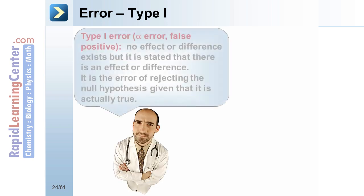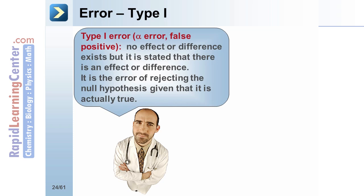When testing hypotheses, there are two types of error that may occur. Type 1 error, which is known as a false positive, occurs when no effect or difference exists but it is stated that there is an effect or difference. It is the error of rejecting the null hypothesis given that it is actually true.